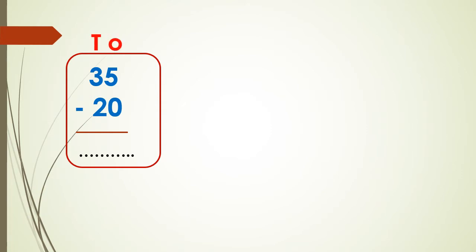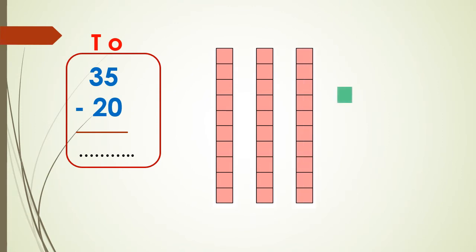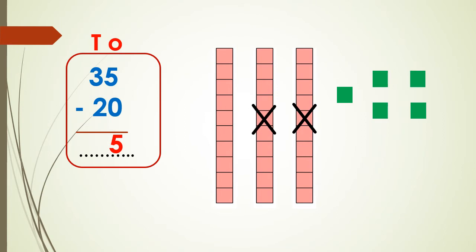For example, if we have 35 minus 20 — in 35, I have 3 tens and 5 ones. Let's represent 3 tens and 5 ones. It means I'll take away 2 tens from 35. Let's cross out 2 tens: 1, 2.